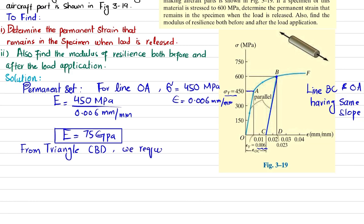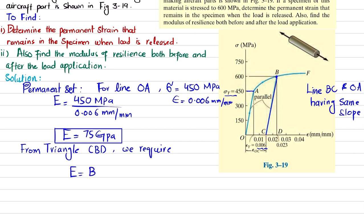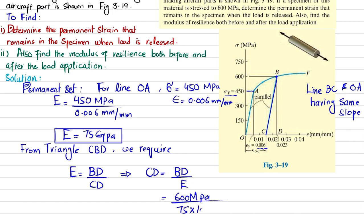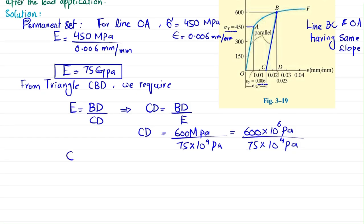We need to find CD. We can write E = stress / strain = BD / CD. So CD = BD / E. Here BD = 600 MPa, and E = 75 GPa = 75 × 10⁹ Pa. So CD = 600 × 10⁶ Pa divided by 75 × 10⁹ Pa, which gives CD = 0.008 mm/mm.